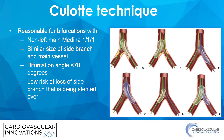The coulotte technique is reasonable for non-left main Medina 1,1,1 bifurcations if the size of the side branch is similar to the size of the main vessel and the bifurcation angle is less than 70 degrees. This should only be done if there is a low risk of loss of the side branch being stented over.